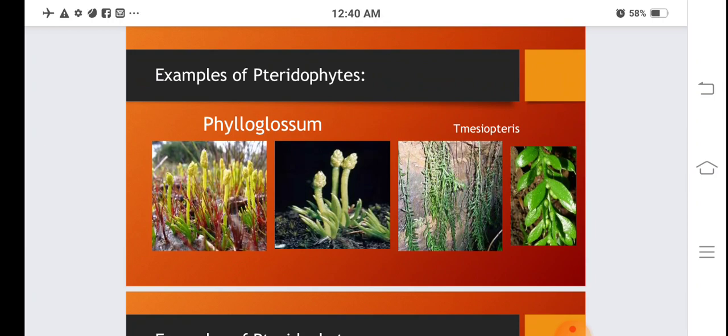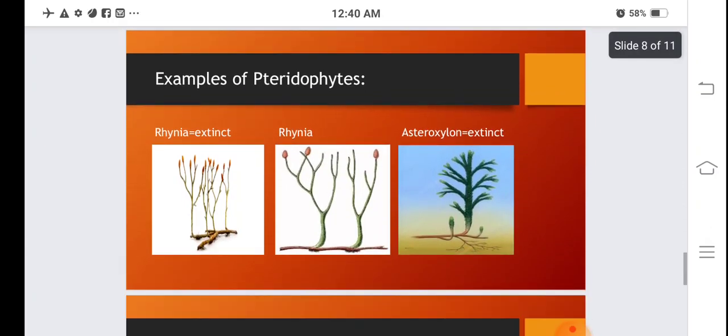Rhynia is another example of pteridophytes. Rhynia is nowadays extinct. They are dichotomously branched plants. Their tips have sporangia, and inside sporangia, spores were found.